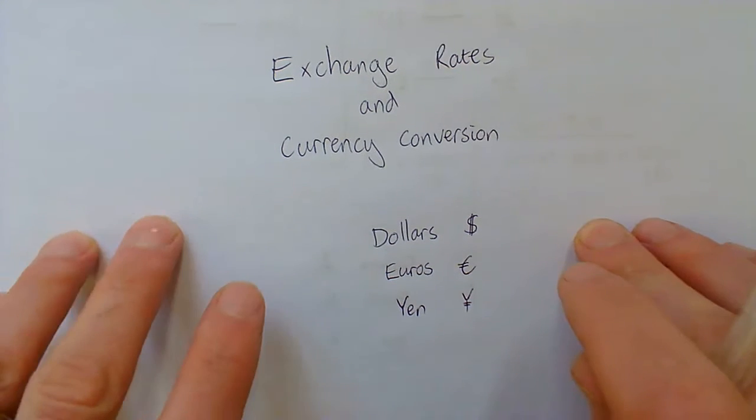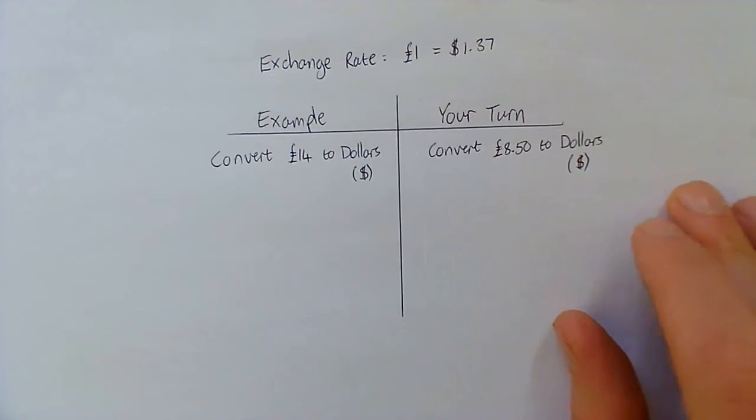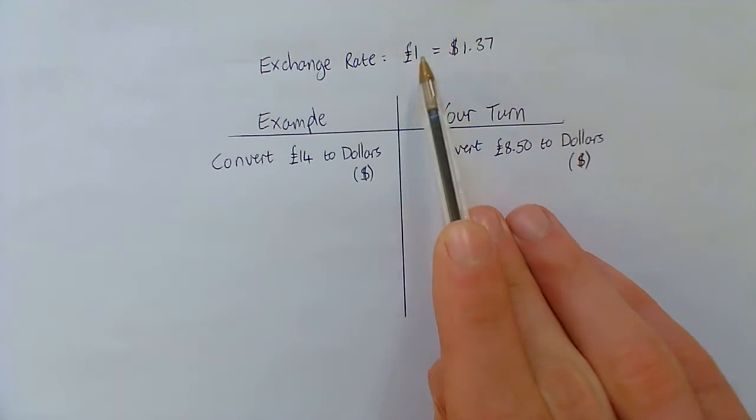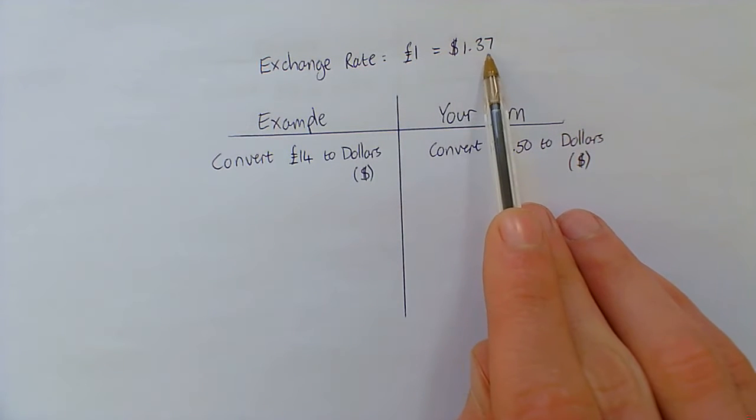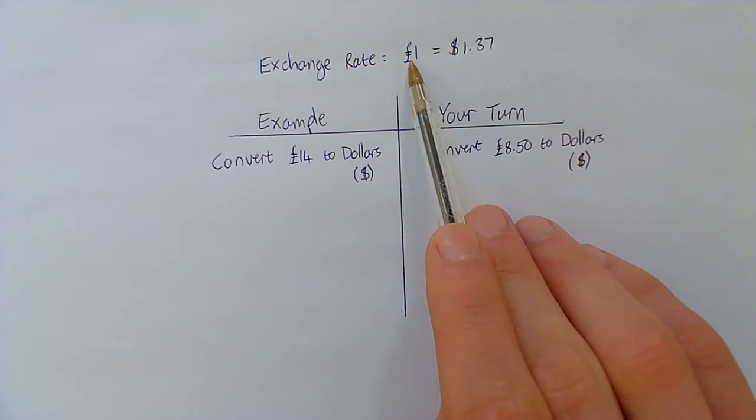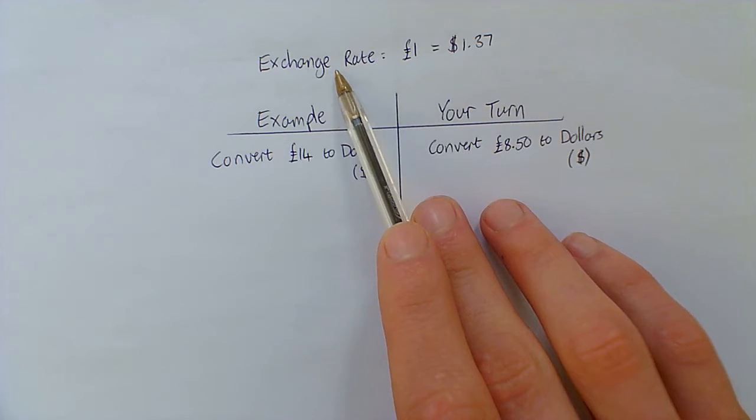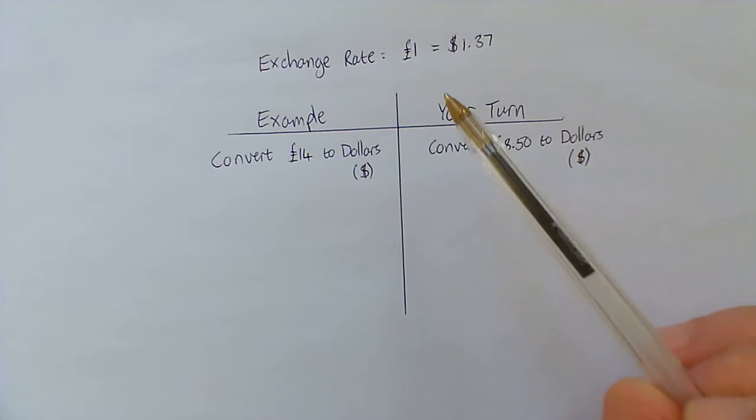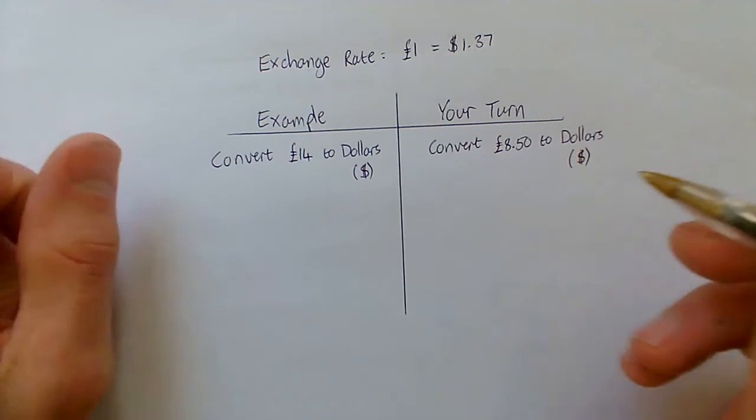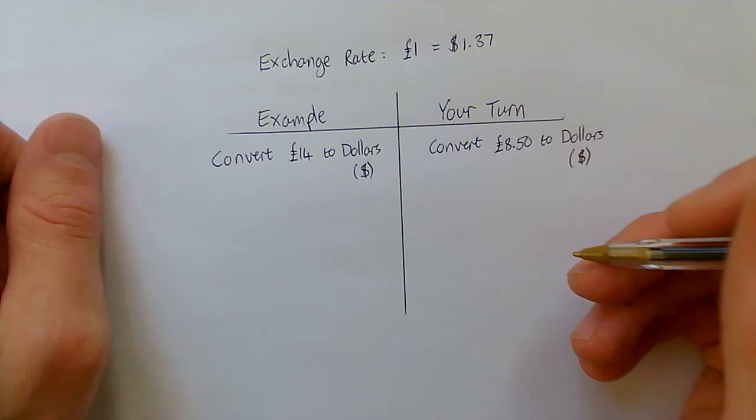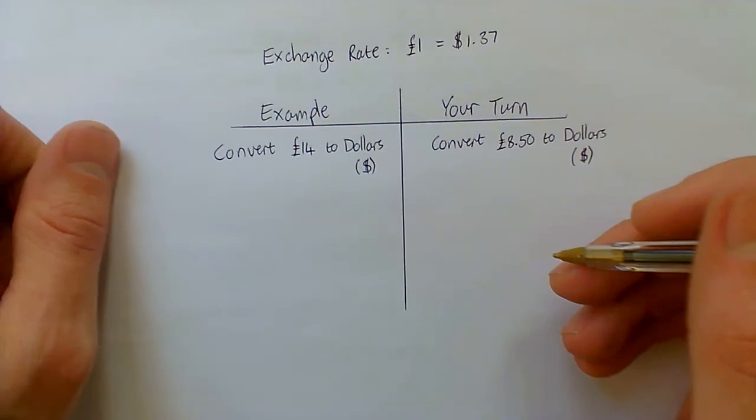So in this first example that I'm going to do, which is here, my exchange rate for one pound, I will get $1 or $1.37. So for one pound, I get $1.37 and that's my exchange rate. In different currencies, you'll have a different exchange rate. And I will actually get you to look up some exchange rates in the real world for your second starter that you're going to do.